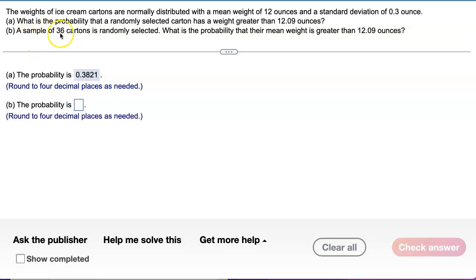You add up all their weights and divide by 36 to find their average. Find the mean weight of these 36 ice creams. They're asking what's the probability that that average you just calculated is greater than 12.9?